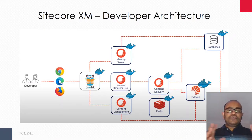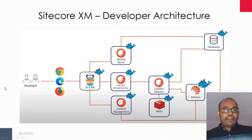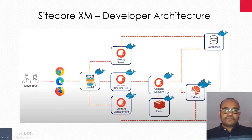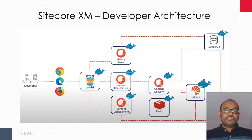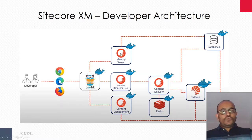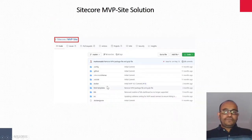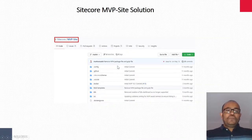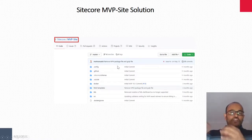This is the high-level topology — each one is a single container, and there is a reverse proxy. Traffic acts as the reverse proxy: it receives the request, passes it to the respective container, and sends the response to the user. This is the Sitecore MVP site. Now we'll go and download it and set it up.